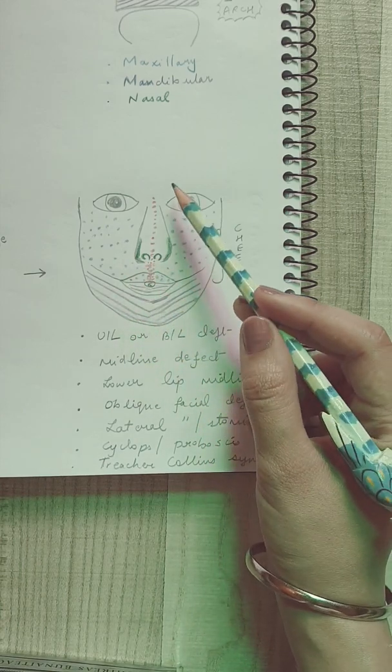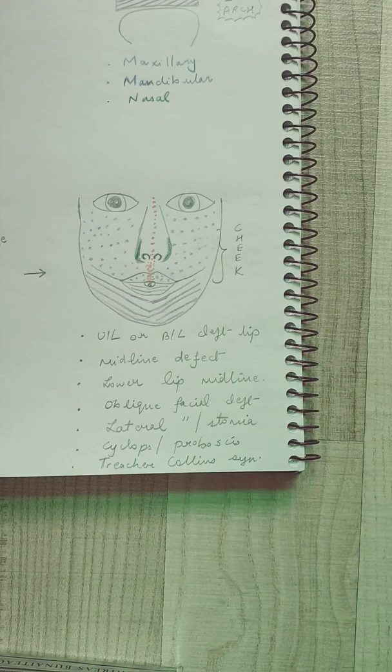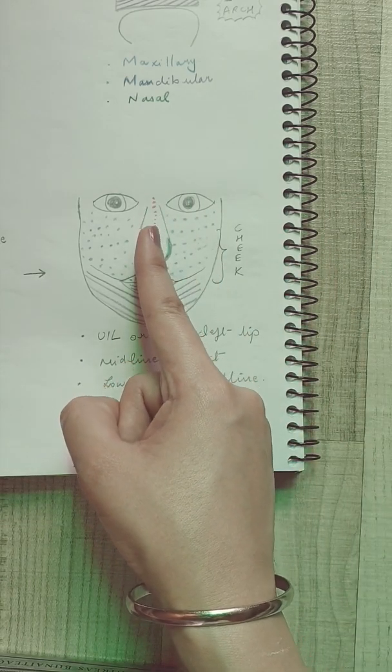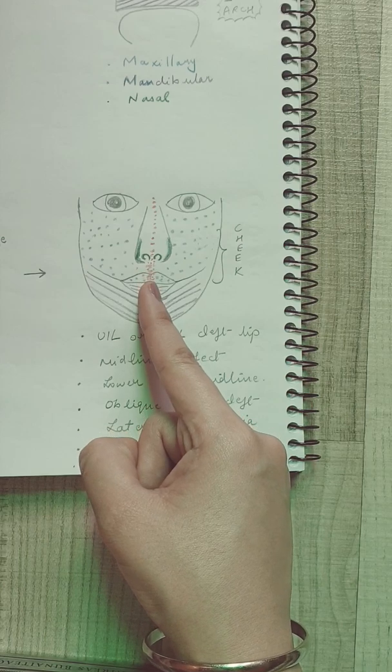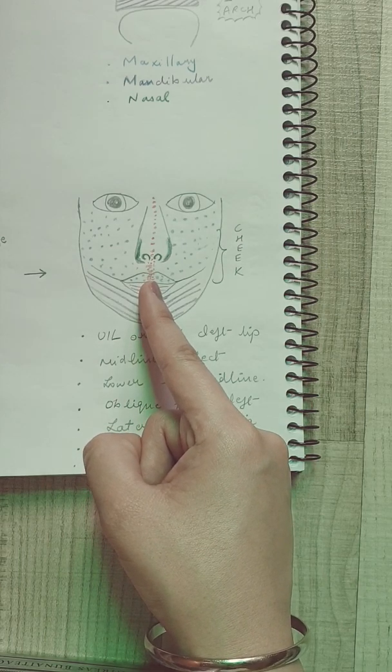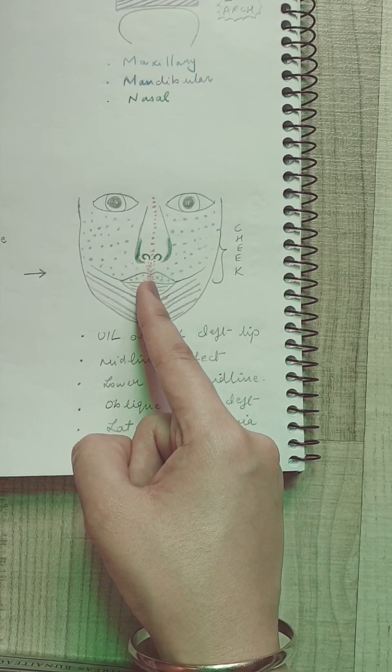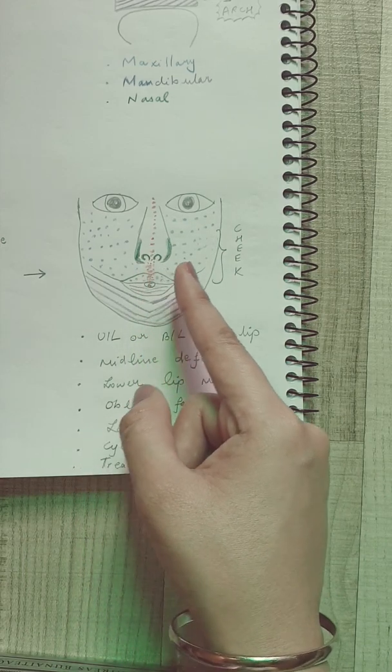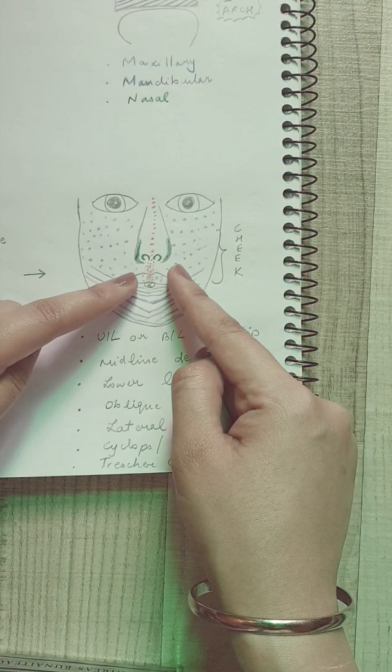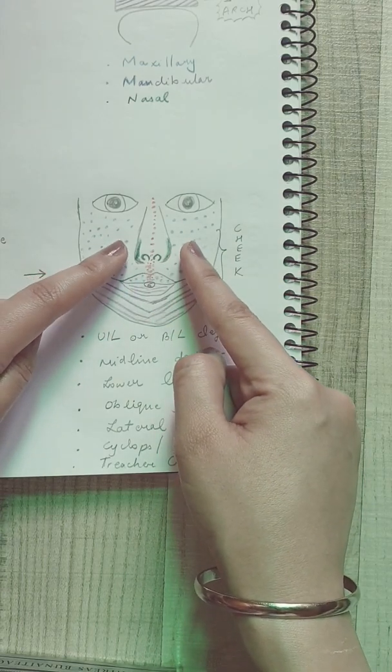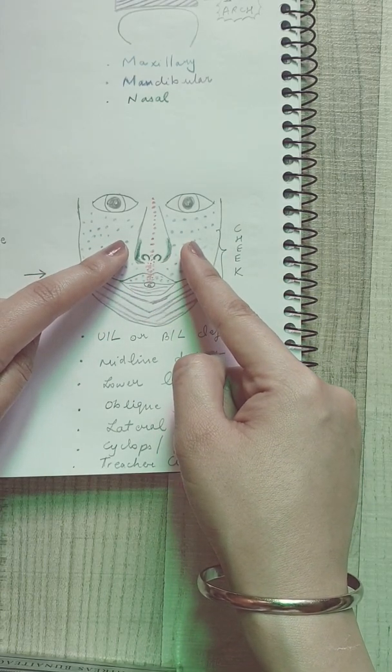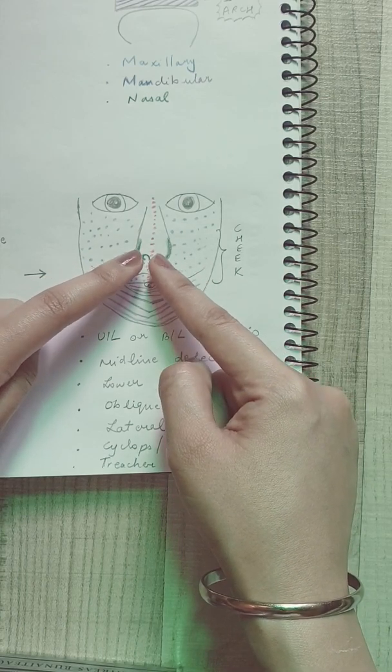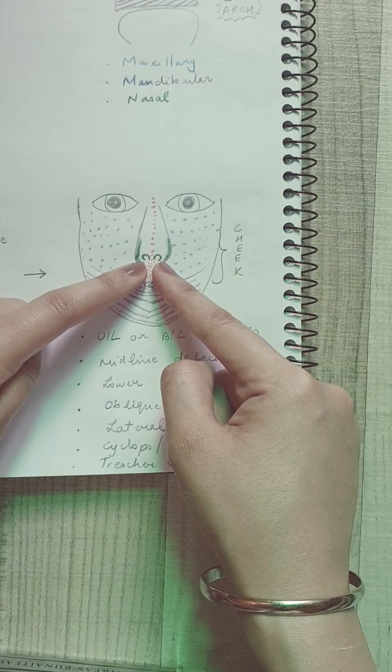If we start from above downwards, you can see that this frontonasal process in the midline is going to go all the way up till here, and it is going to help in the formation of this part, of the upper lip, which is going to be the future philtrum. The upper lip on either side is going to be formed by the fusion of these paired maxillary processes along with that of the medial nasal process.